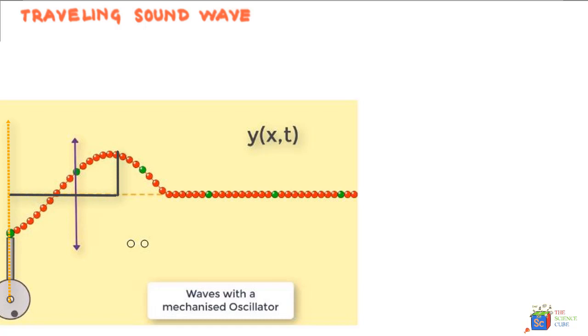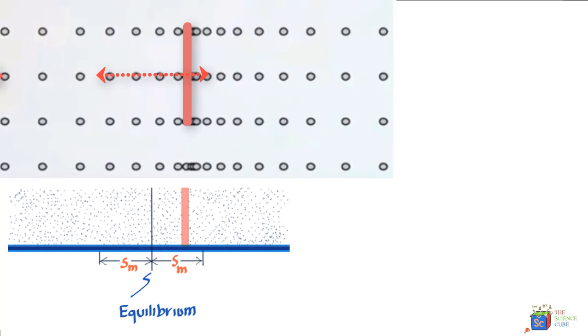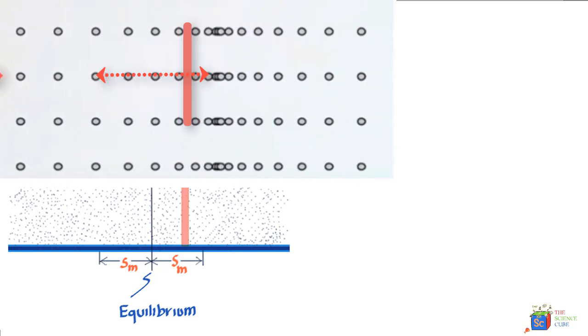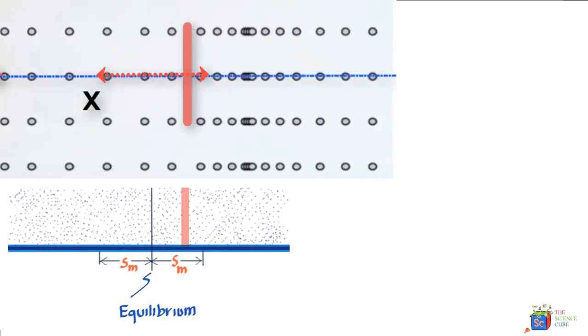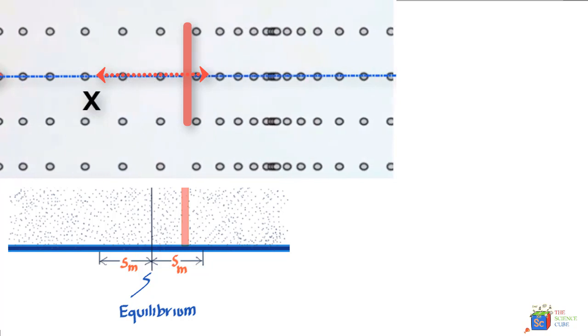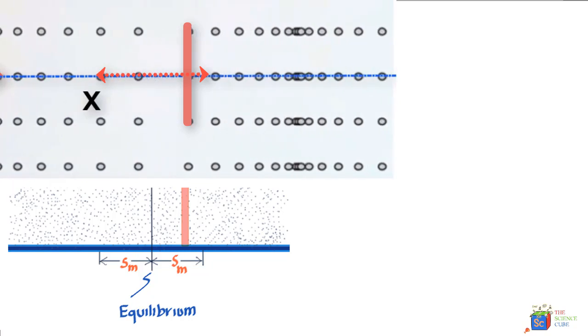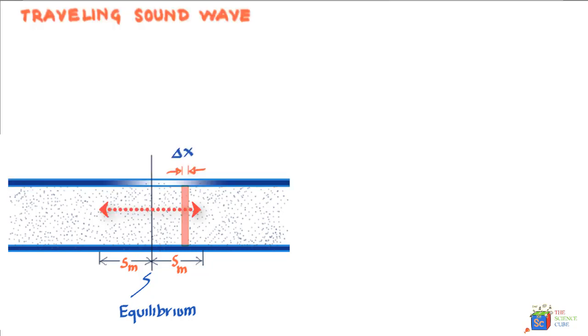We can use the same idea here, but with a little difference that is the particle instead of moving up and down is moving left and right or parallel to the x axis instead of the y axis. So we can write the displacement as x(x,t).